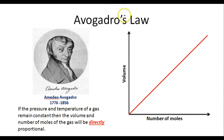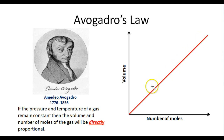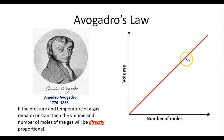If we take a look at Avogadro's Law on a graph, we have the number of moles of gas on the x-axis and the volume of the gas on the y-axis. As the number of moles of gas increases, the volume will also increase, and if the number of moles decreases, the volume will decrease. Avogadro's Law is a direct proportion — if moles double, volume doubles; if moles triple, volume triples; and if moles are cut in half, volume is cut in half.